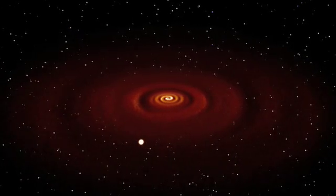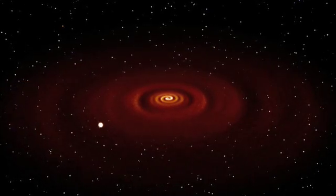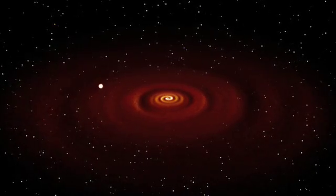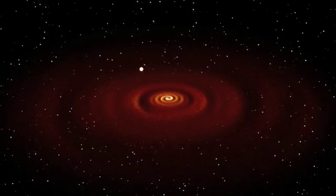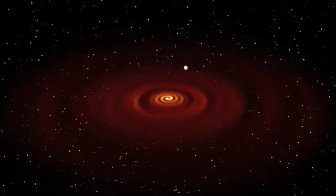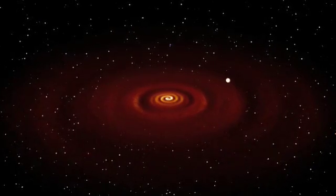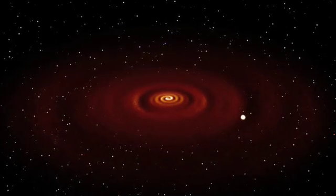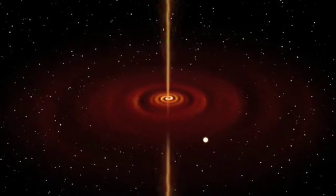This black hole is drawing matter from a companion star, which orbits it at a distance safely outside the event horizon. As the gas spirals into the black hole, it heats up and emits huge quantities of high energy radiation.